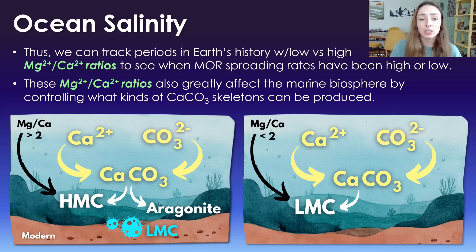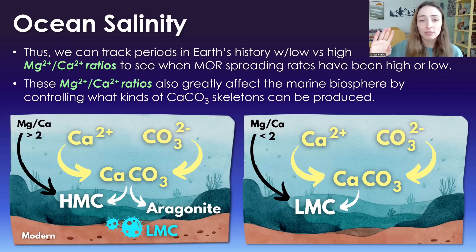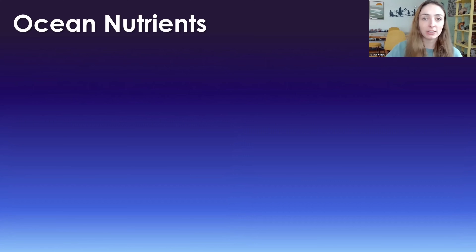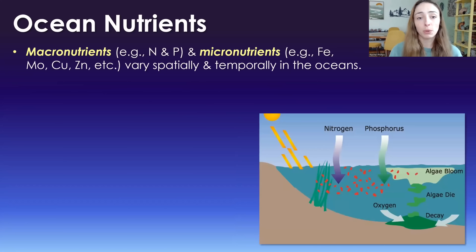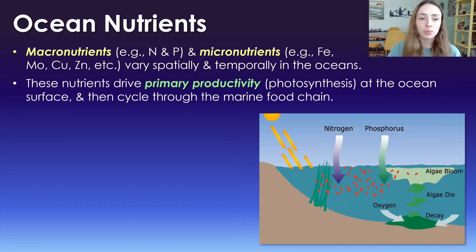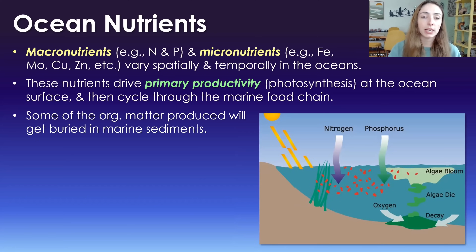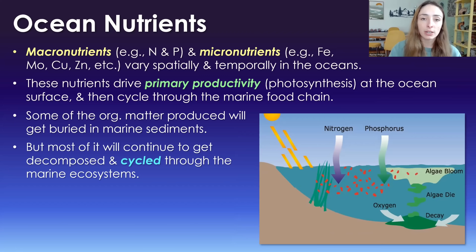This greatly affects the marine biosphere, and I discuss it further in my carbonate chemistry video — I'll link it to the top right. Moving to ocean nutrients: there are macronutrients and micronutrients, both of which vary spatially and temporally in the oceans. These nutrients drive primary productivity or photosynthesis and algal blooms at the ocean's surface. Once algae incorporate these nutrients into their biomass, the nutrients cycle through the marine food chain. Some organic matter gets buried in marine sediments, but most continues to be decomposed and cycled through marine ecosystems.